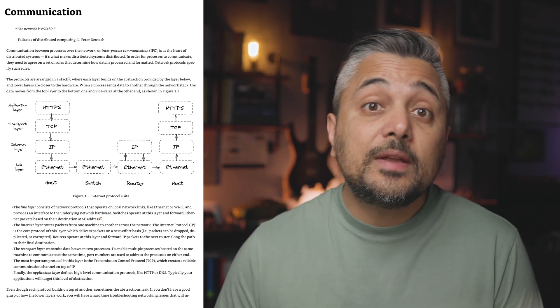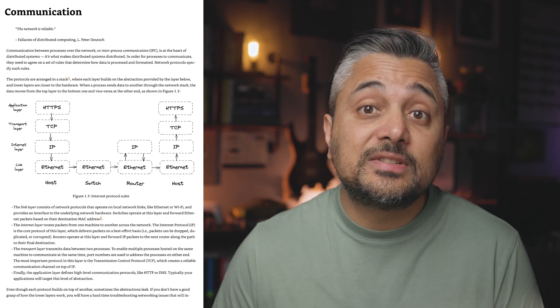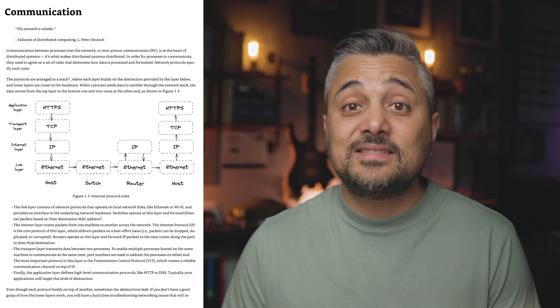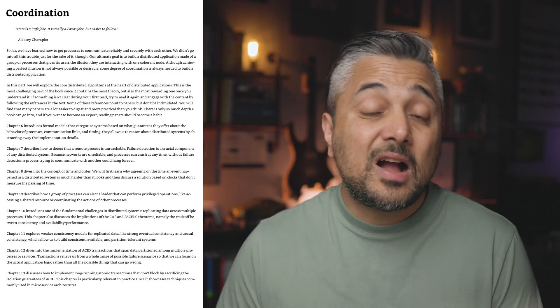However, as you add more and more nodes to your system, you will need to coordinate that communication, and that is exactly what part two is about. In this section, the author explains how you detect failures in your system, how you handle replications, algorithms for selecting the primary nodes, various consensus algorithms, and finally how you can perform transactions over a distributed system.